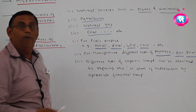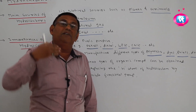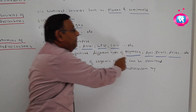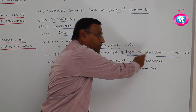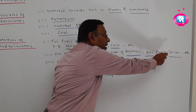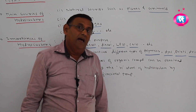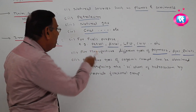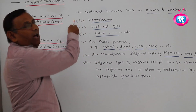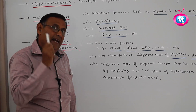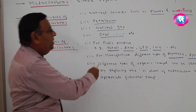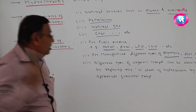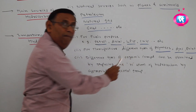The second importance of hydrocarbons is for manufacturing different types of polymers, plastics, dyes, paints, and drugs. These types of products are very important in our daily lives and they are obtained from hydrocarbons only. So the second importance is to obtain different types of useful components.